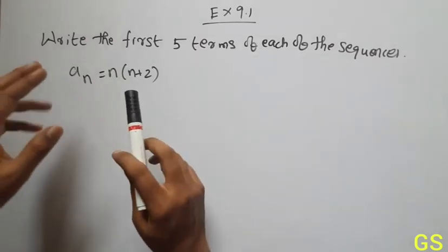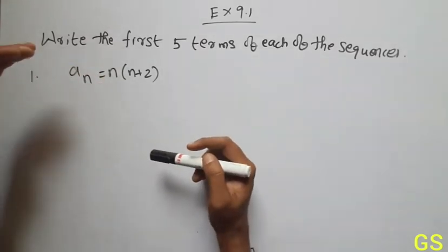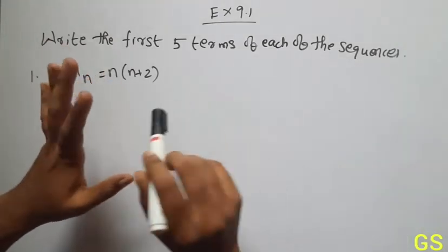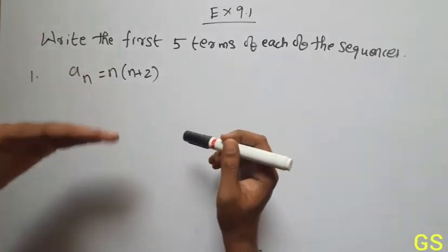This is the first sum. You can see the first heading: Write the first five terms of each of the following sequences. You can see one, two, three, four.